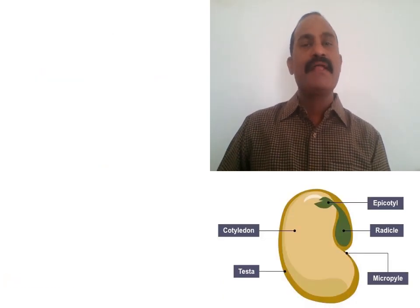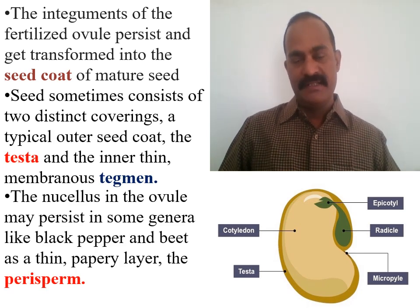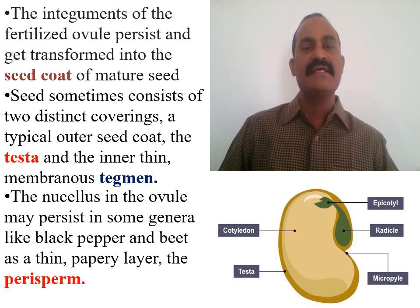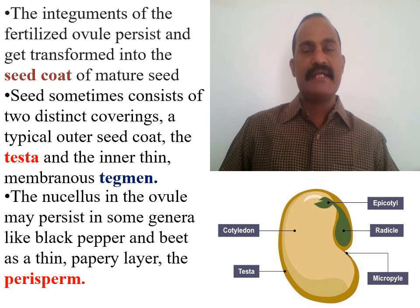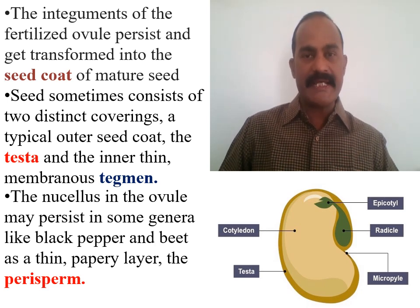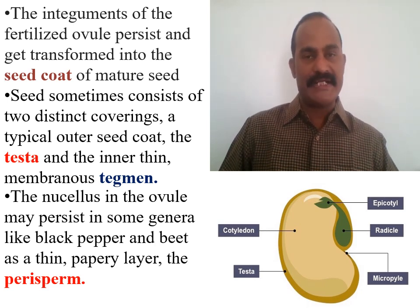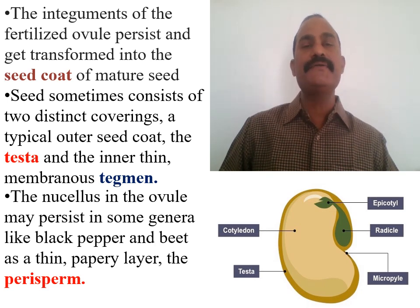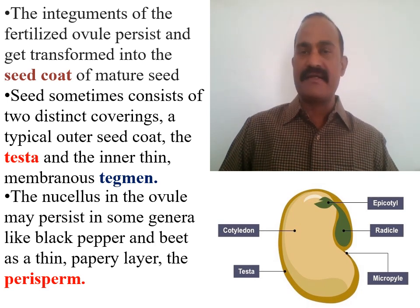If we see the process of seed formation, we know the structure of the ovule. The ovule contains a central parenchymatous tissue called the nucellus, which is surrounded by a covering in the form of integuments. These integuments can be one — unitegmic — two — bitegmic — or three — tritegmic — but the most common angiospermic ovule is bitegmic. Once fertilization is completed, these integuments are converted to a seed coat, also called the testa. In the mature seed, they are referred to as testa or seed coat.